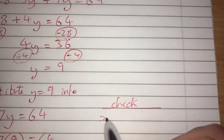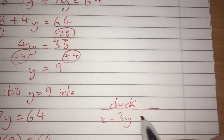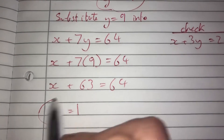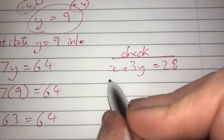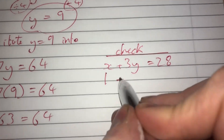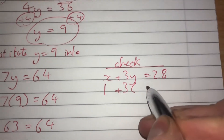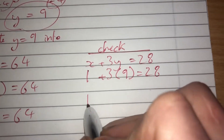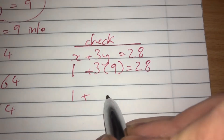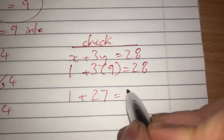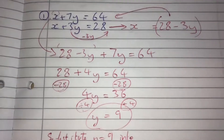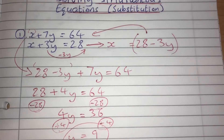As always, it's good practice to check the answer using the other equation. Taking x plus 3y equals 28 with y equals 9 and x equals 1: substituting in gives 1 plus 3 times 9, which is 1 plus 27, which does in fact equal 28. So that's correct. That is the method of substitution on two linear equations.